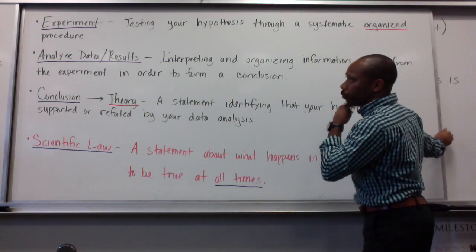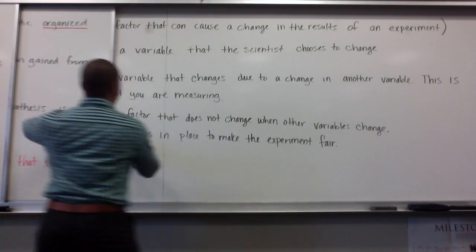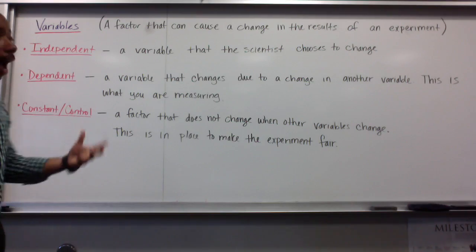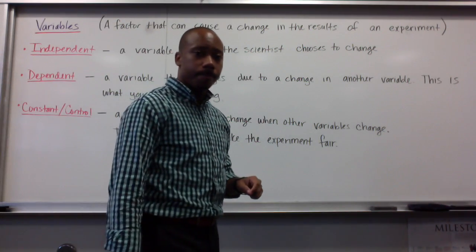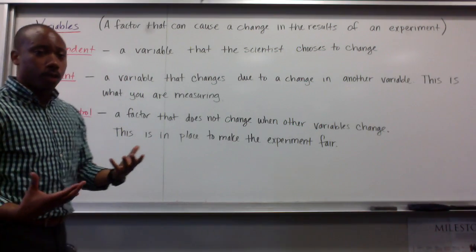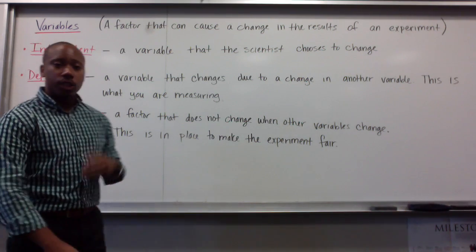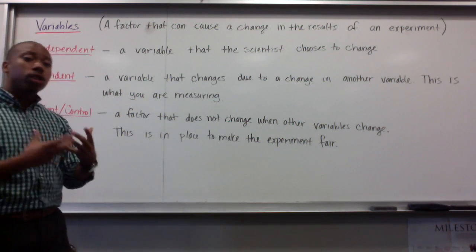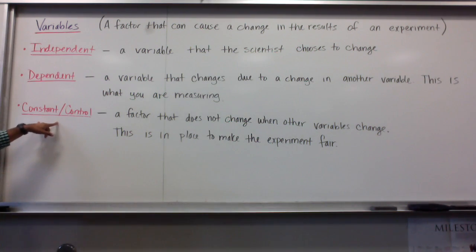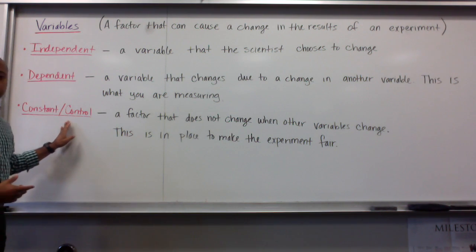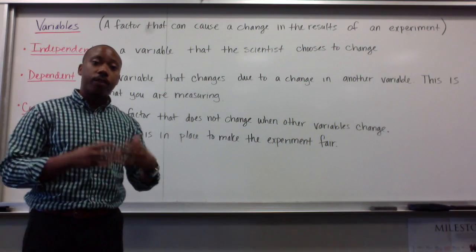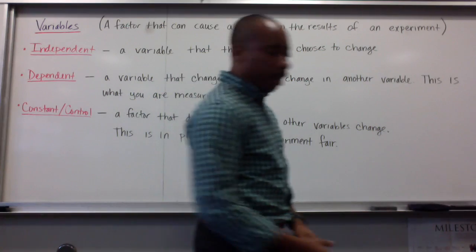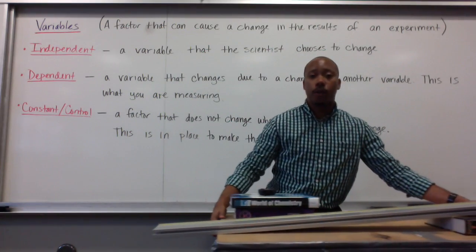Let's focus on experimentation for a minute. In an experiment, you're going to have to set some parameters in order to analyze your data sufficiently. To do that, we have something called variables — factors that can cause a change in the results of an experiment. We have three major types of variables. The first is the independent variable: a variable that the scientist chooses to change. The dependent variable is a variable that changes due to a change in another variable — this is usually what you're measuring or observing. The third type is a constant or control variable: a factor that does not change even when other variables change. This is in place to make the experiment fair.